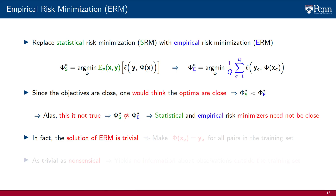In particular, I want you to realize that the solution to the ERM program is trivial. You just need to make the optimal AI copy the output y_q for all of the inputs x_q that appear in the training set. As long as you do that, the point-wise losses L of y_q, phi of x_q vanish for all q, and the empirical risk is null. Since the loss function is non-negative, this is the minimum possible value for the empirical risk.